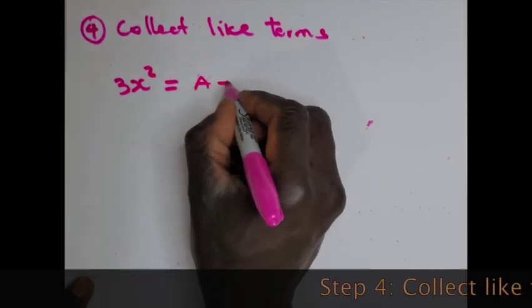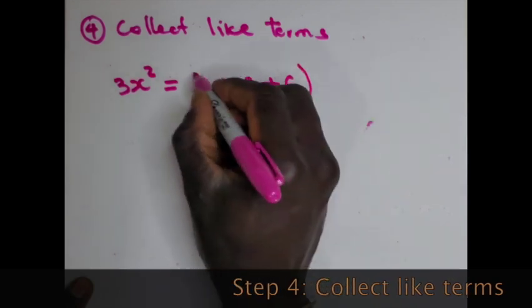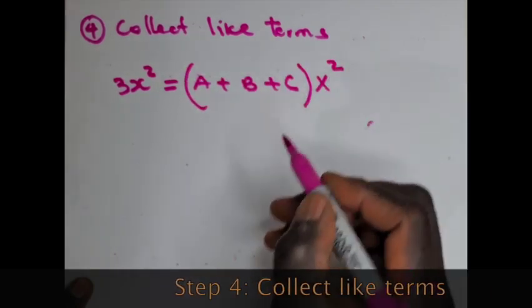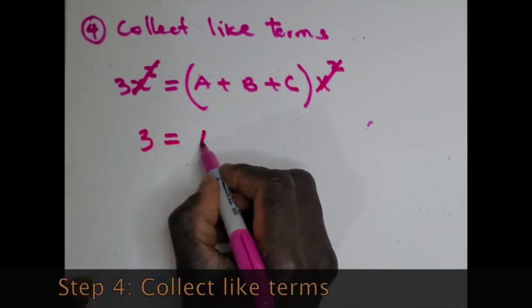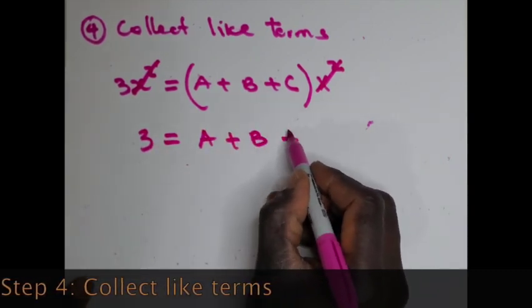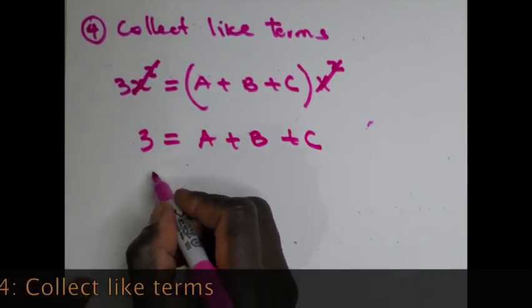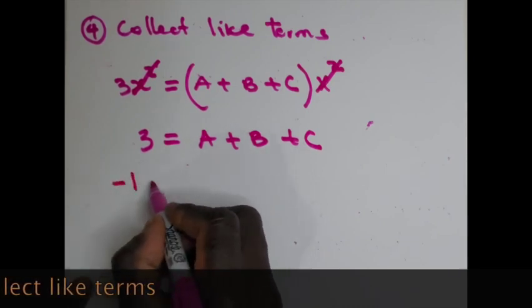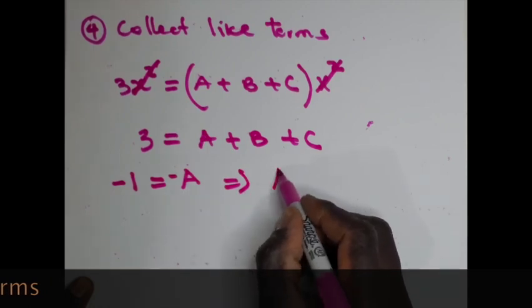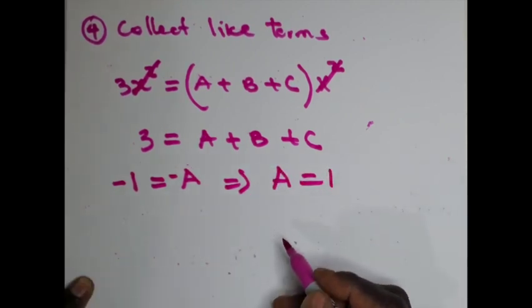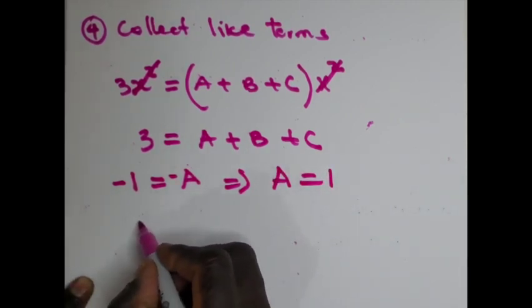Now 3x² is equal to (B + C) times x². Just solve these linear equations to get the constants. A is equal to 1.